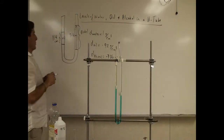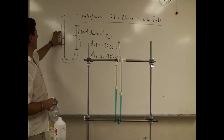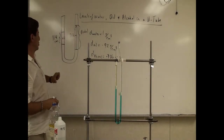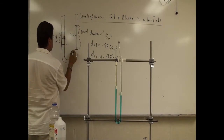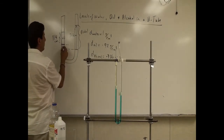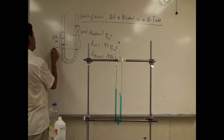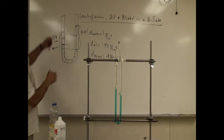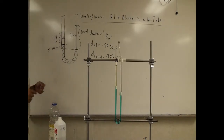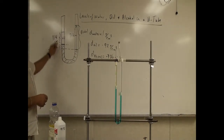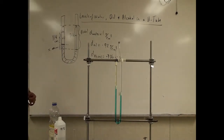This could be a good physics problem. The problem can give you the density of the alcohol and the density of the oil, the height of the oil, and the height of the alcohol. Then you could ask what's the difference in the heights of the water levels — calculate this distance, call it x. Or you can ask what's the difference in heights between the top of the alcohol and the top of the oil. Once you calculate x, you can easily calculate that distance too.